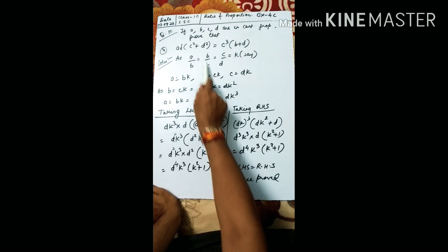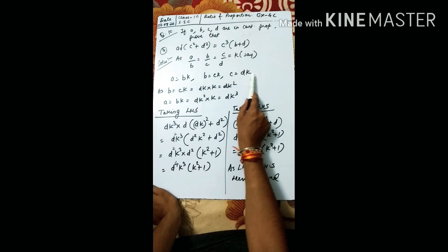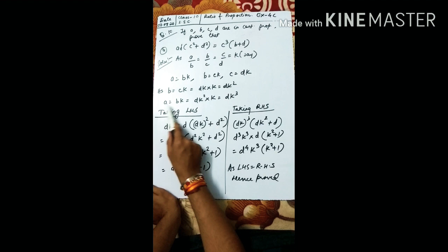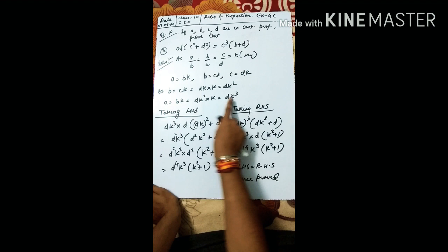So a = bk, b = ck, and c = dk. Since b = ck, in place of c we can put dk, so b = dk·k = dk². And since a = bk, we put b = dk², so a = dk²·k = dk³.